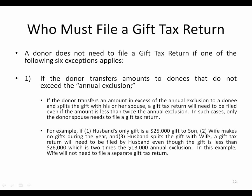Who must file a gift tax return? A donor does not need to file if one of six exceptions applies. First, if all transfers to any one donee don't exceed the annual exclusion — for 2012, no gift exceeding $13,000 to any one person means no return is required. However, if a donor makes a gift exceeding the annual exclusion and splits it with a spouse, a return must still be filed even if the amount is less than twice the annual exclusion. For example, a $20,000 gift to a daughter that is split with your wife still requires filing, even though it's under $26,000.